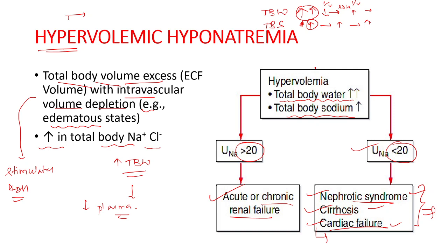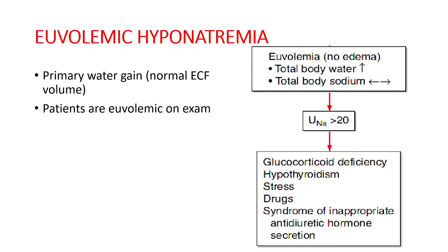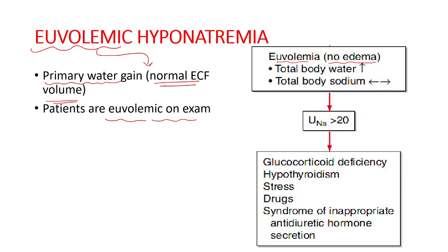Euvolemic hyponatremia is named because ECF volume appears normal on examination, but strictly speaking there is primary water gain. These patients have no edema but total body water is increased due to ADH activity, while total body sodium is normal, resulting in decreased serum sodium. All these conditions are associated with increased urine sodium greater than 20 mmol. Causes include glucocorticoid deficiency due to secondary adrenal insufficiency, where primary adrenal insufficiency causes hypovolemic hyponatremia but secondary adrenal insufficiency causes euvolemic hyponatremia.